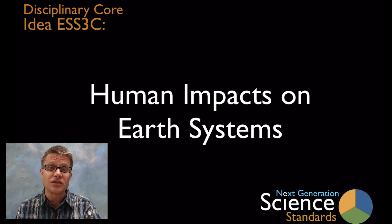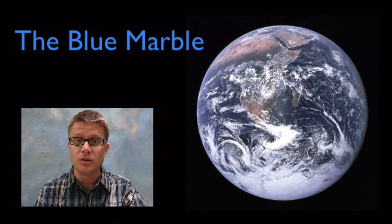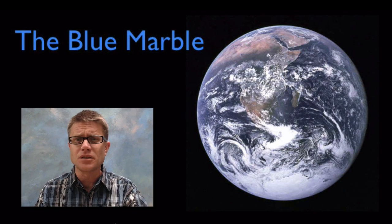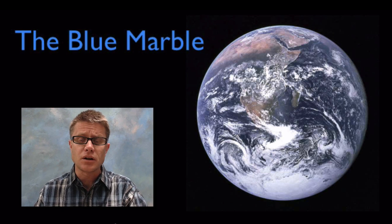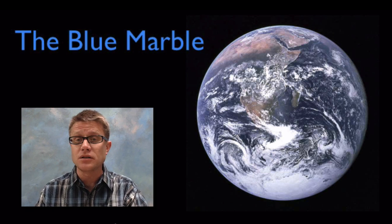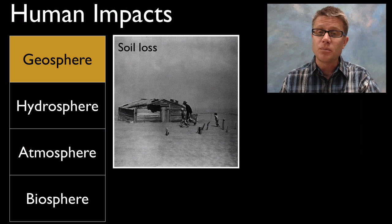When the Apollo 17 astronauts were leaving the Earth they took the most famous image that was ever taken — it's called the Blue Marble. When people viewed this in the 1970s it changed them fundamentally. They finally saw a picture of the Earth and realized it wasn't infinite. The changes we make to our Earth are going to be passed forward in time and on to future generations. So humans have impacted and continue to impact all four of the spheres on our planet.